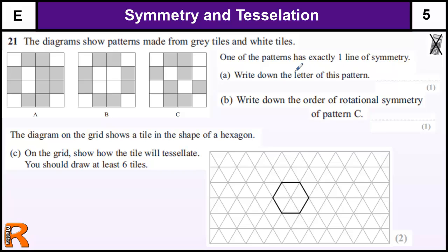One of the patterns has exactly one line of symmetry. Write down the letter of this pattern. If we look at these patterns, well this one has one, two, three, four lines. This one has no lines of symmetry, and this one has just the one line of symmetry going down the middle that way. So that's pattern A with one line of symmetry.